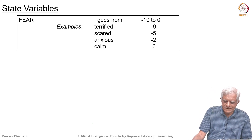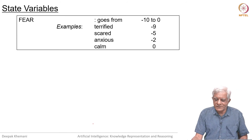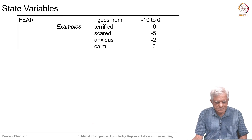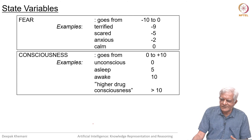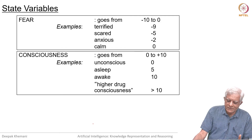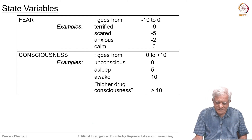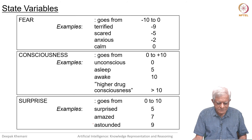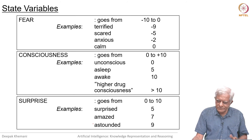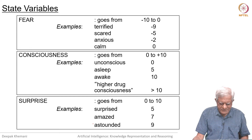Fear is a negative emotion — it goes from minus 10 to 0, starting with terrified, scared, anxious, and at 0 you are calm. Consciousness is in some sense a positive variable: at 0 you are unconscious; when you are asleep you are maybe partly conscious, so it is 5 for example; when you are awake it is 10, and if you are at some higher level of consciousness then maybe more than 10. Surprise goes from 0 to 10 and accommodates words like surprised, amazed, astounded.